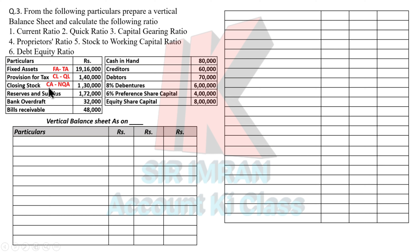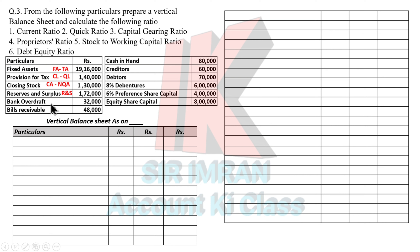Closing stock will appear in current assets as a non-quick asset. Reserve surplus is a liability and will appear under the heading of reserve and surplus. Bank overdraft is a current liability and non-quick liability. Bill receivable is a current asset as well as a quick asset. Cash in hand is also a current asset and quick asset. Creditors are current liability and quick liability. Debtors are current assets and quick assets. Debentures are borrowed funds under secured loans — we must specify whether the loan is secured or unsecured. Bank loans and debentures are secured loans; loans from directors or family members are unsecured loans.